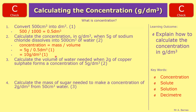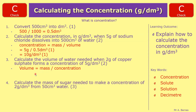Question 3: calculate the volume of water needed when 2 grams of copper sulphate forms a concentration of 5 grams per decimetre cubed. The equation is volume equals mass divided by concentration — from the triangle, mass is at the top, with concentration and volume below. Putting in the values: 2 divided by 5 gives 0.4 decimetres cubed. Always remember to include your units.